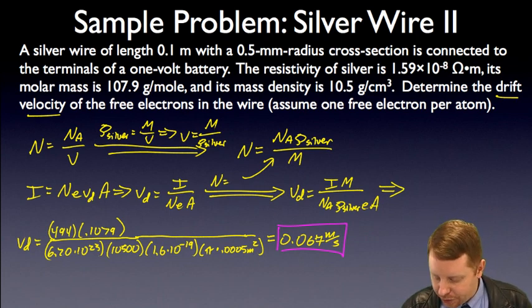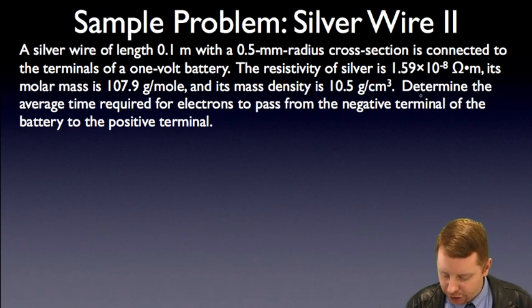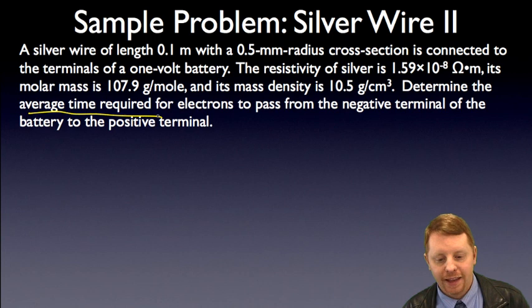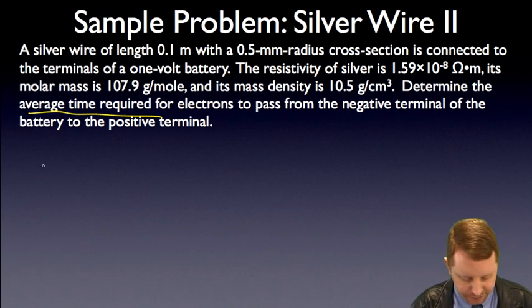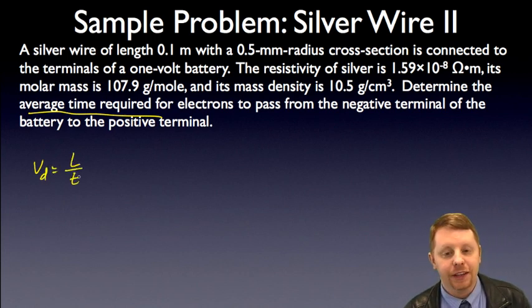All right, let's go to step three here. Same wire, same constants, but now we want to determine the average time required for electrons to pass from the negative terminal of the battery to the positive terminal. The average time. Well, we can find that using basic kinematics. Our drift velocity is going to be the length divided by time. v equals d over t, or delta x over t.